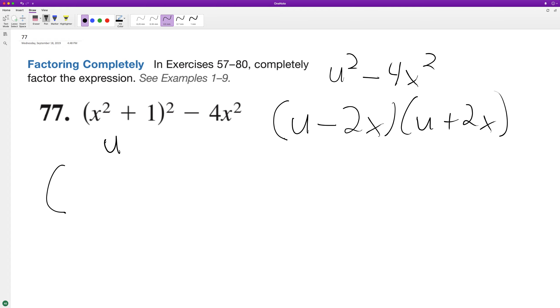Now we substitute back in for u. We get x squared plus one minus two x in the first factor, and x squared plus one plus two x in the second factor. Rearranging, we end up with x squared minus two x plus one, and x squared plus two x plus one.